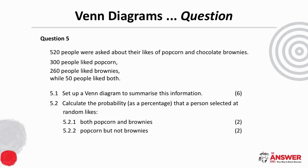You may notice that Venn diagram questions can be quite wordy. Being aware of this and knowing you must just read through the question one part at a time is key. In question 5 we are given information about 520 people who were asked about their likes of popcorn and brownies, and we're first asked to set up a Venn diagram and then calculate two probabilities.